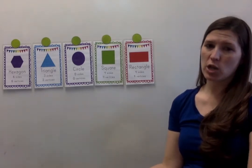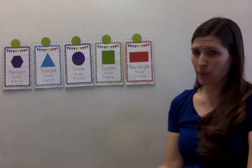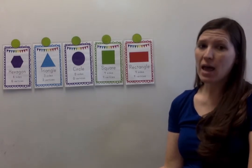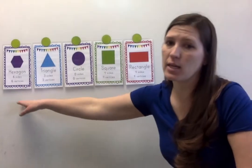Which shape has 6 vertices? What means 6? Hex means 6. So a hexagon has 6 vertices.